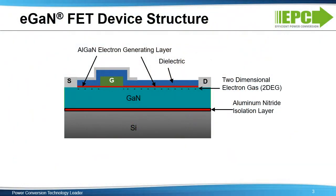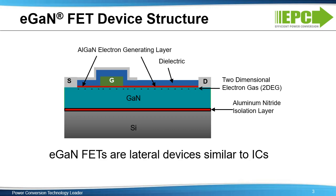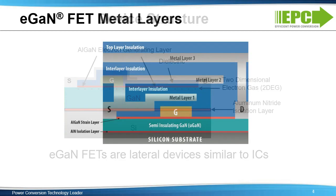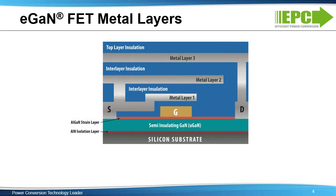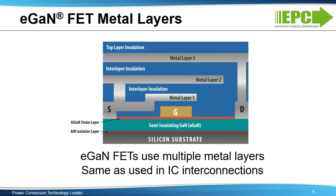eGaN FETs are lateral devices built on a GaN epitaxial layer with an isolation layer between the active device regions and the supporting silicon substrate. These eGaN FETs use multiple layers, the same as those used in integrated circuit interconnects, making integration easy.